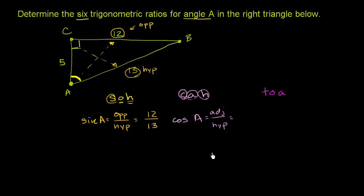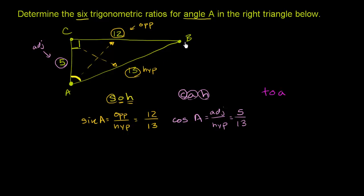What's the adjacent side to angle A? There are two sides next to angle A — one is the hypotenuse, and the other has length 5. The adjacent side is CA, so it's 5. The hypotenuse, opposite the 90-degree angle and the longest side, has length 13. So the cosine of A is 5 thirteenths. The side of length 5 is the adjacent side. The hypotenuse is the same regardless of which angle you pick, but the opposite and adjacent depend on the angle chosen.